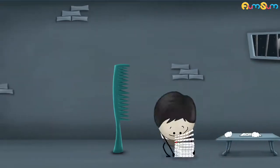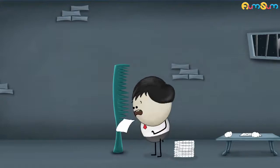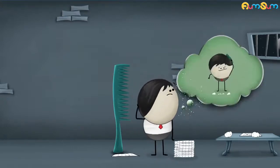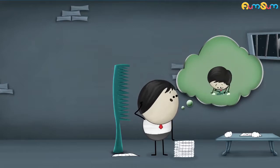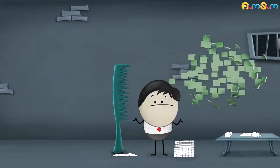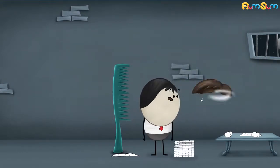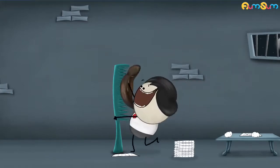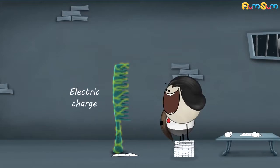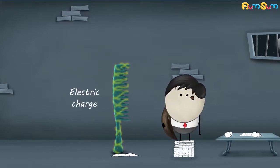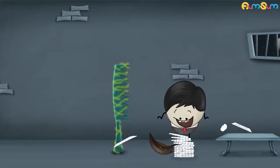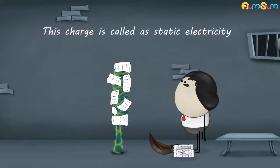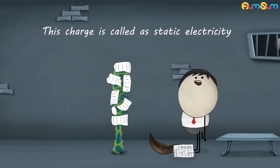The plastic comb did not have the ability to exert a force and attract the pieces of paper. So, after rubbing the plastic comb on our dry hair, why was it able to attract the pieces of paper? When we rubbed the plastic comb on our dry hair, it gained an electric charge. Once it got electrically charged, it got the ability to exert a force on the pieces of paper and attract them. This charge is called static electricity.